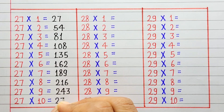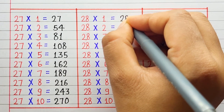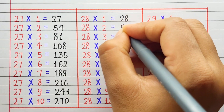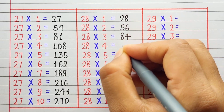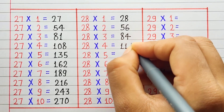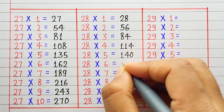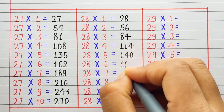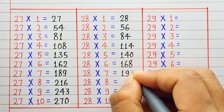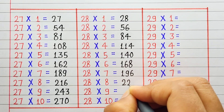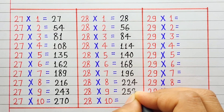27 10 ja 270. 28 1 ja 28. 28 2 ja 56. 28 3 ja 84. 28 4 ja 114. 28 5 ja 140. 28 6 ja 168. 28 7 ja 196. 28 8 ja 224.